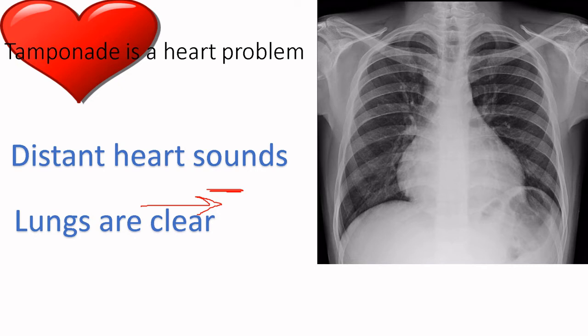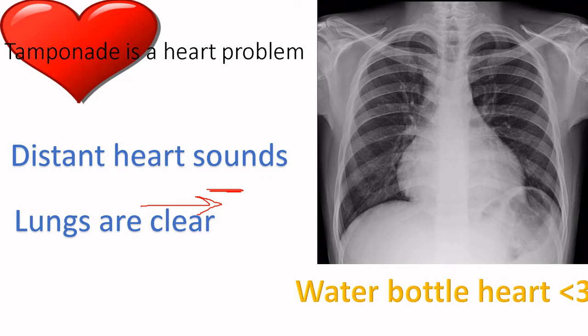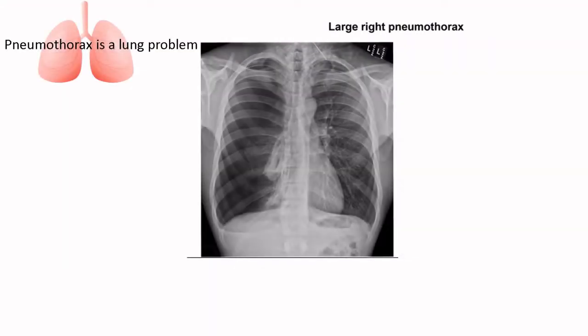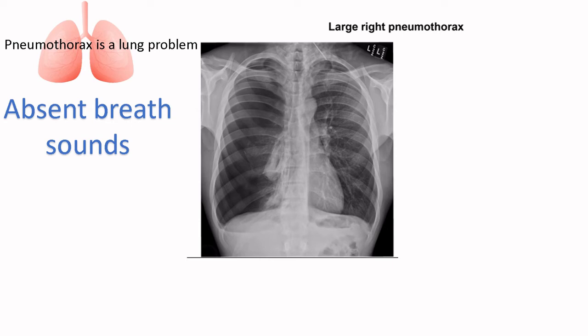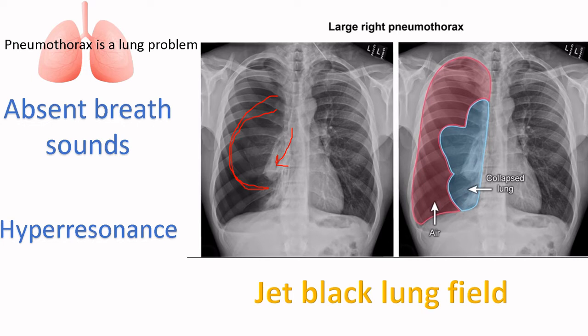So in tamponade — a heart problem — there are distant heart sounds but the lungs are perfect. On chest X-ray there is a water bottle heart, because the problem is also in the heart due to all the fluid around it. In pneumothorax — a lung problem — all abnormalities on lung examination and chest X-ray will be in the lungs. On auscultation there are absent breath sounds, and on percussion there is hyper-resonance because there's a lot of air in the thoracic cavity. The lung is collapsed, so no air gets through. On chest X-ray there is a jet black lung field.